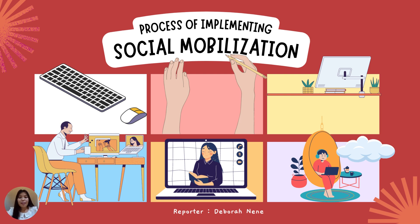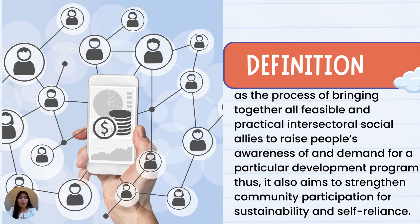Good day everyone, I'm Debbie. We are still in Module Six. In the previous topic we talked about social mobilization continuum, defined as the process of bringing together all feasible and practical intersectoral social allies to raise people's awareness of and demand for a particular development program. It also aims to strengthen community participation for sustainability and self-reliance.